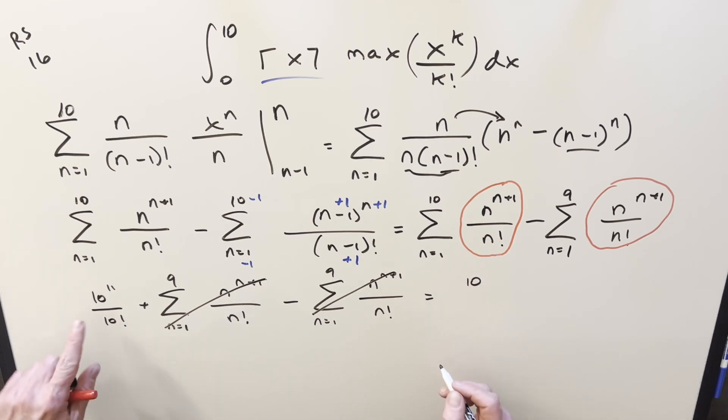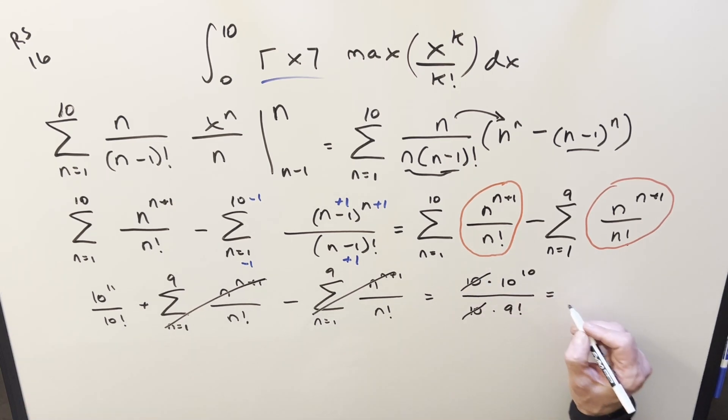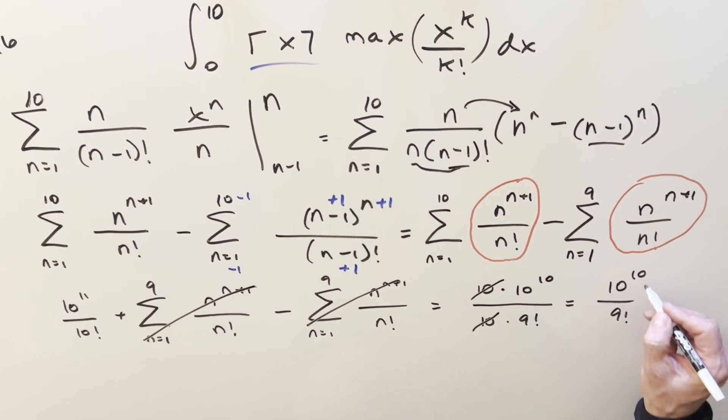But one last thing, 10 to the 11, I can write as 10 times 10 to the 10. And 10 factorial, I can write as 10 times 9 factorial. The only reason I do that is because then I can cancel off 10s. And then for my final solution, we just get 10 to the 10 over 9 factorial. And that's it.